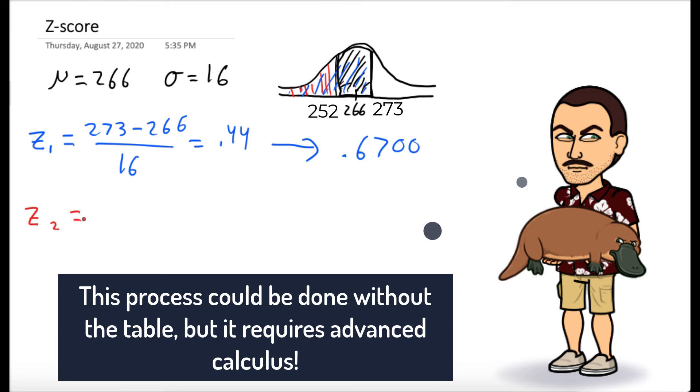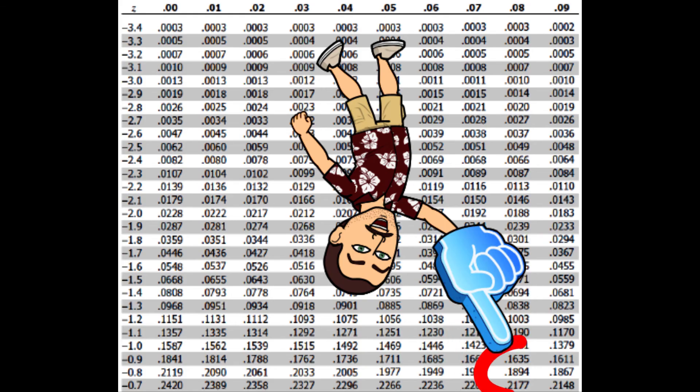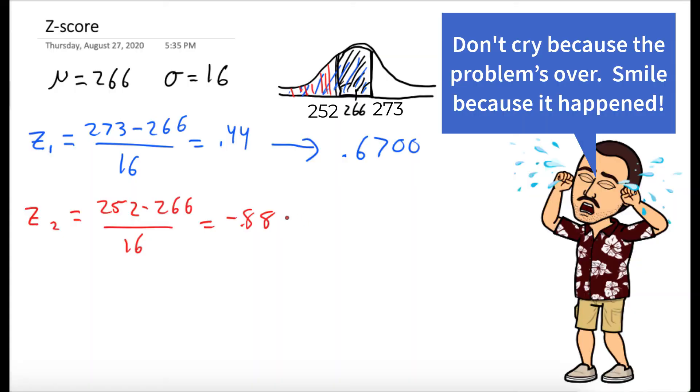For z2, again, let's compute the z-score. So 252 minus 266 over 16, and that gives us negative 0.88. Again, let's go to our table and we see that we get 0.1894. So 18.94% of the area is shaded in red.